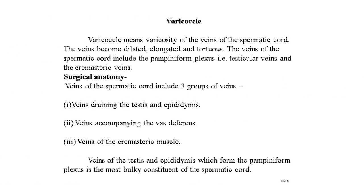The next topic is varicocele. Varicocele means varicosity of the veins of the spermatic cord — the veins become dilated, elongated, and tortuous. The veins of the spermatic cord include the pampiniform plexus (testicular vein) and the cremasteric veins. Occasionally, the testicular veins may be normal but the cremasteric veins become varicose.